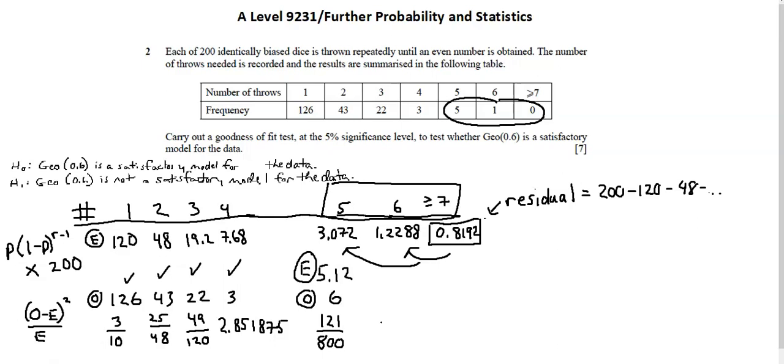And now I can calculate the test statistic. Chi squared equals the sum of all of these calculations that I've made quantity O minus E squared over E.